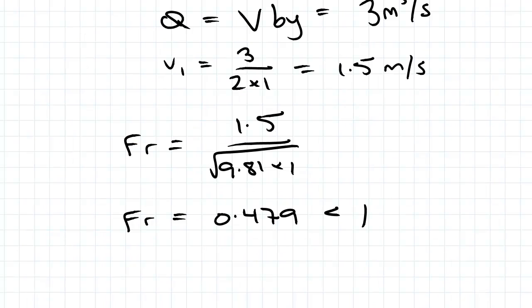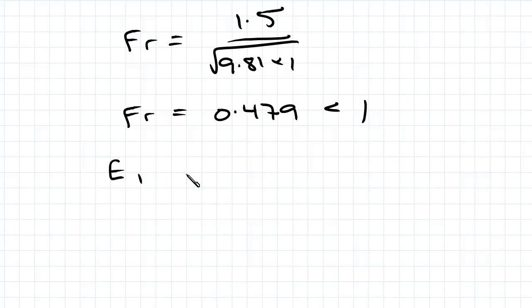Now we need to find e1 using y1 and we need to use the specific energy equation we've seen before to do this. And the specific energy equation is e1 equal to y1 plus q squared on 2gy1 squared. We were given y1 equal to 1m so we need to resolve little q from capital Q. So our flow rate per meter width is going to be Q on b which is 3 divided by 2.